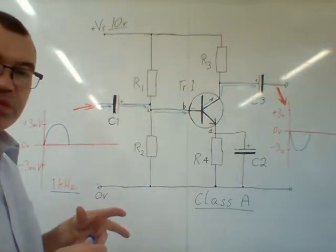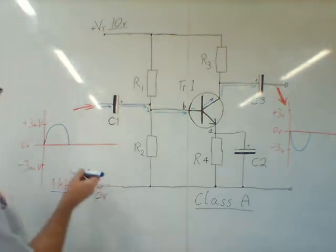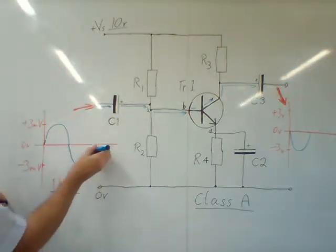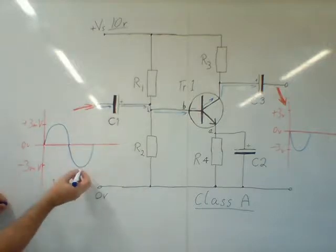Finally, we're going to look at what happens when the second half of the cycle is injected in the amplifier. Now the input swings negative down to minus 3 millivolts.